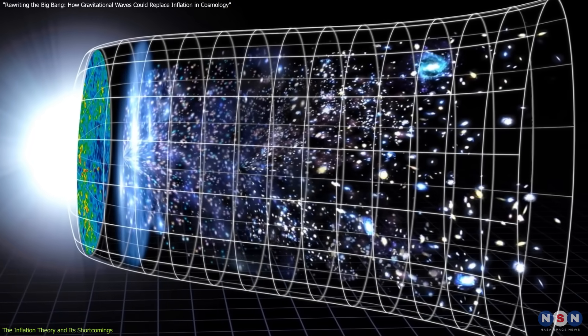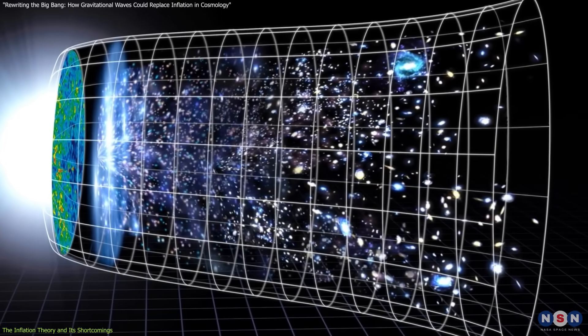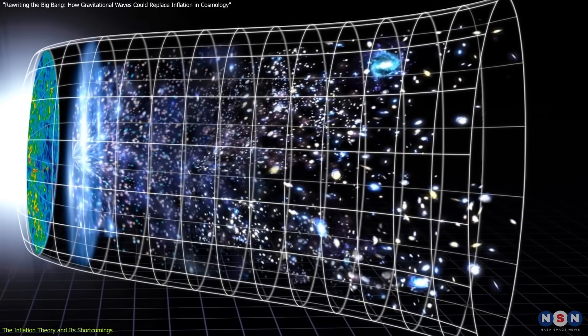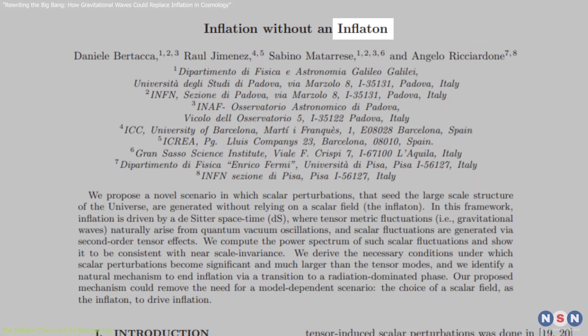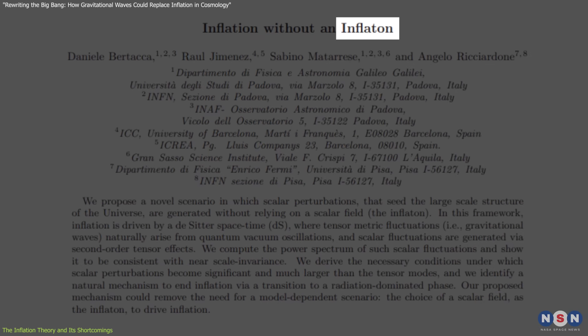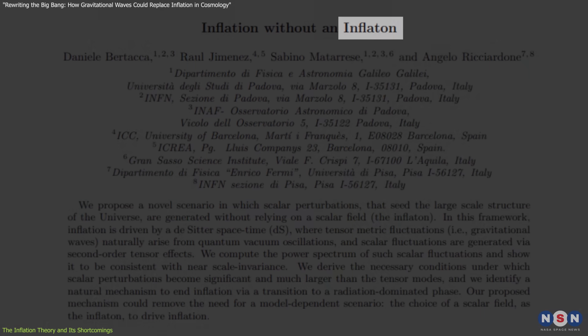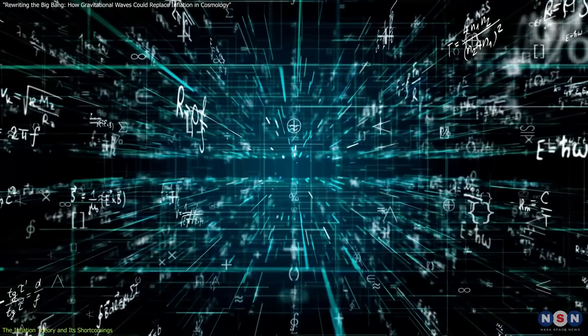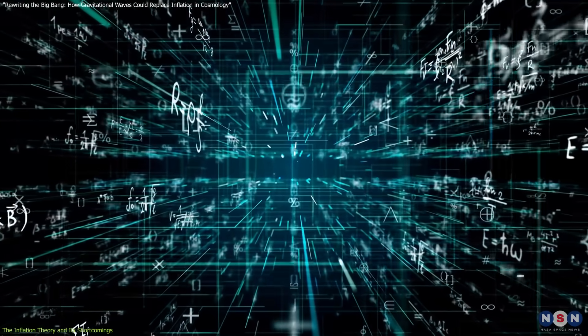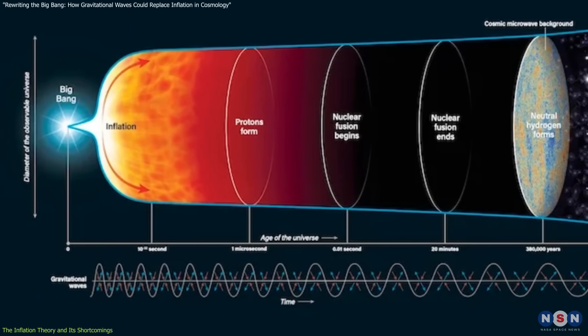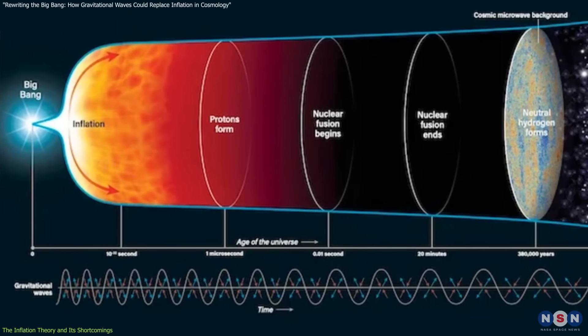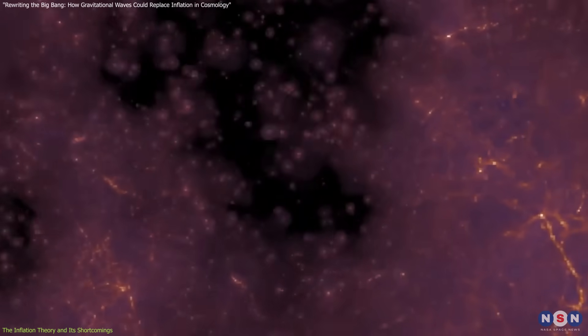Despite its explanatory power, the inflationary model faces significant theoretical and observational challenges. One major issue is its reliance on a scalar field, often called the inflaton, to drive the rapid expansion. While mathematically plausible, there is no direct evidence for the existence of such a field. Additionally, the exact mechanism that triggered inflation and caused it to stop remains unknown. The transition from inflation to the radiation-dominated phase of the universe, known as reheating, is poorly understood and highly speculative.